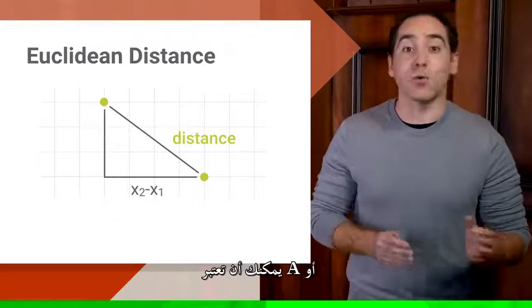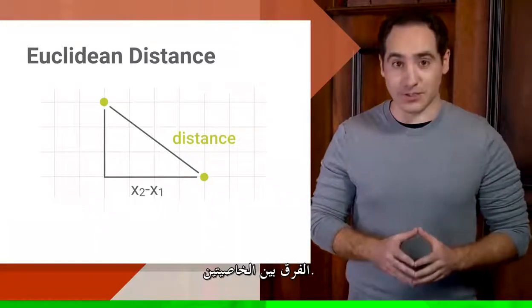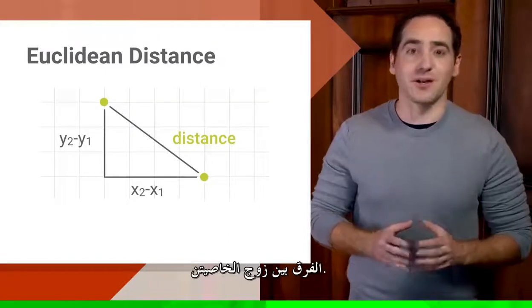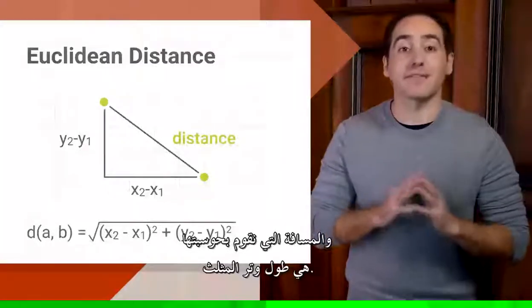You can think of this term as a, or the difference between the first two features. Likewise, you can think of this term as b, or the difference between the second pair of features. And the distance we compute is the length of the hypotenuse.